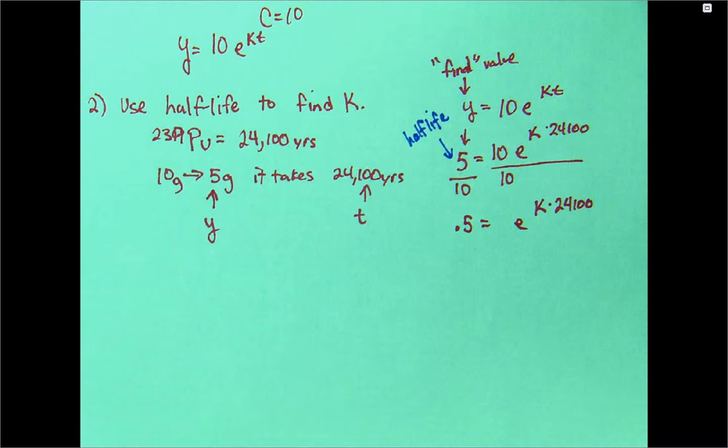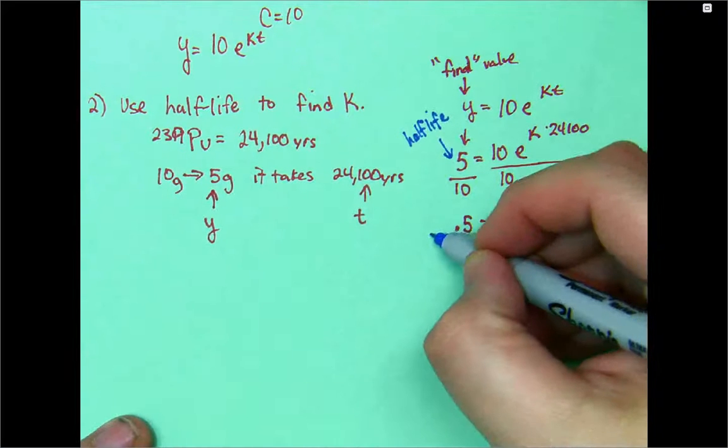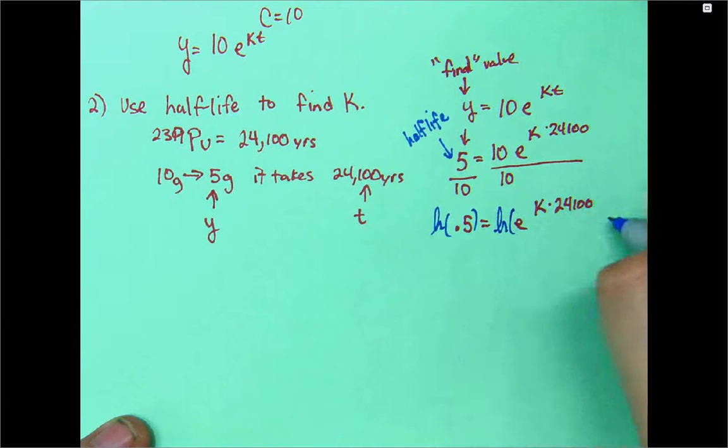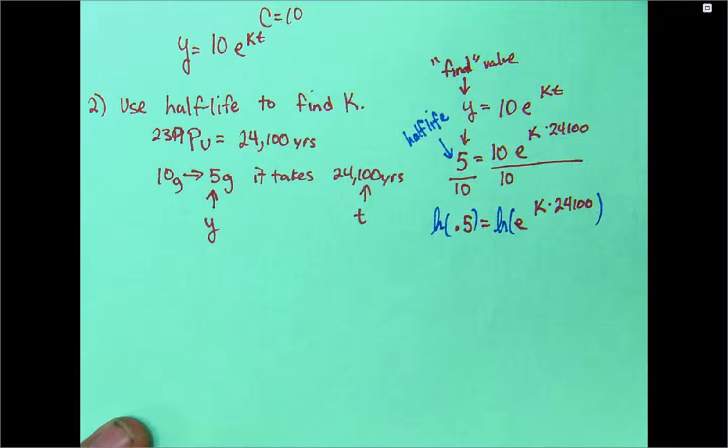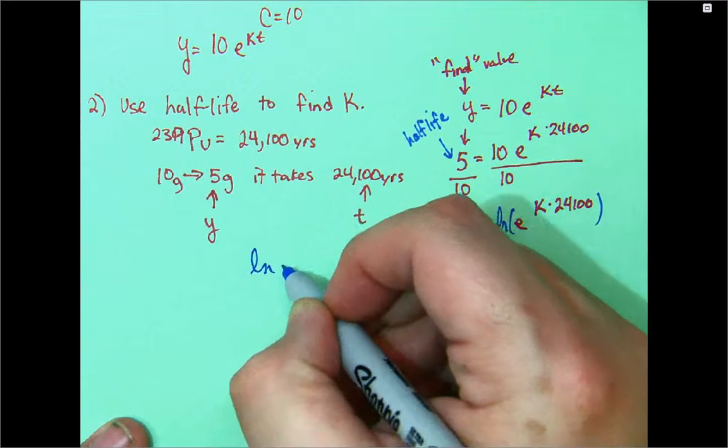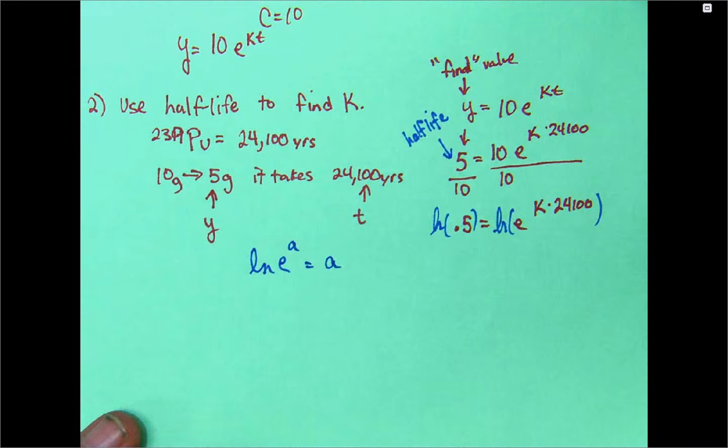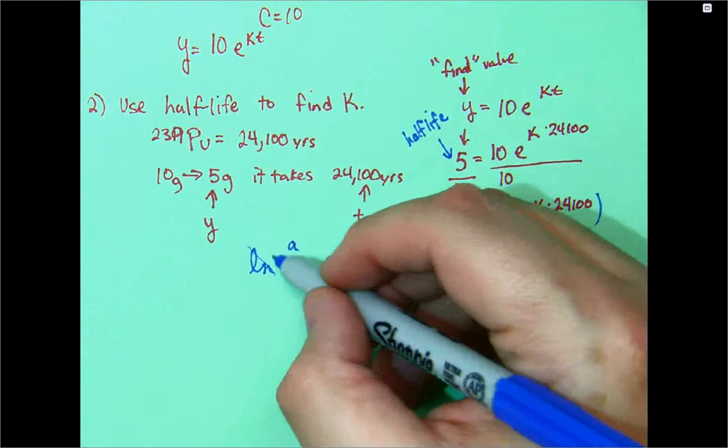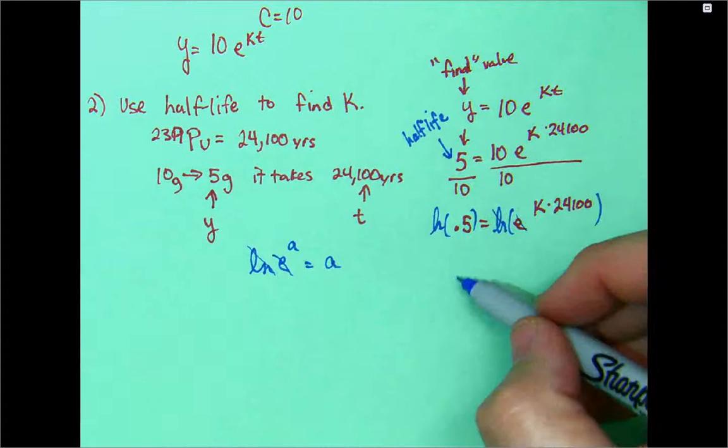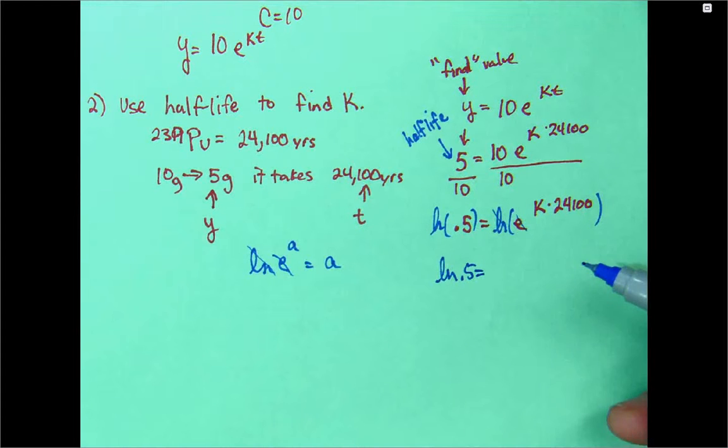So, when you're dealing with a half-life type of problem like this, this is what we're going to end up having. Now, we're going to use those natural log powers, or natural log properties that we have before. I'm going to take the natural log of this side, and the natural log of this side. And there's a rule that says, if you have the natural log of E to, let's say, the A power, it's just equal to A. Because the natural log and E cancel each other out. Like integration and differentiation. Adding and subtracting, multiplying and dividing. Square rooting and squaring. These guys get rid of each other.